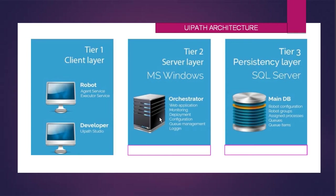How does the architecture work? The first level is Tier 1, which is the client layer — the robot and developer both come under Tier 1. Tier 2 is the server layer, which covers the Orchestrator web application: monitoring, deployment, configuration, queue management, logging, and tracing.